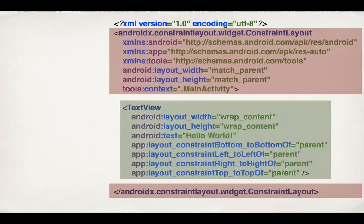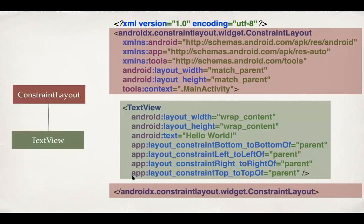The element at the center, which is a child element of the ConstraintLayout, is a TextView. The red ConstraintLayout is the parent or root element, and TextView is the child element inside it. This creates the picture where you have the outer rectangular screen and a TextView inside it at the center.